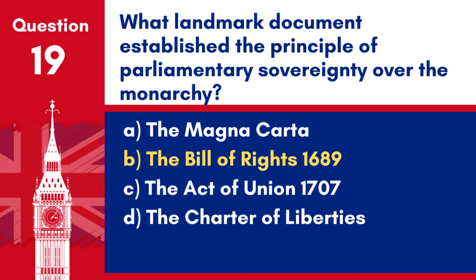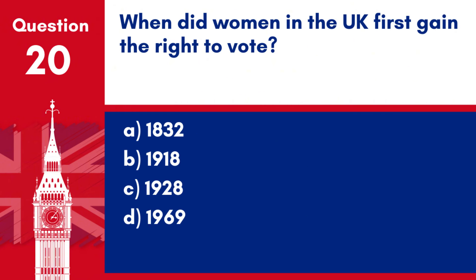Answer: b. The Bill of Rights 1689. This document was crucial in defining the balance of power between the monarchy and parliament in the UK.